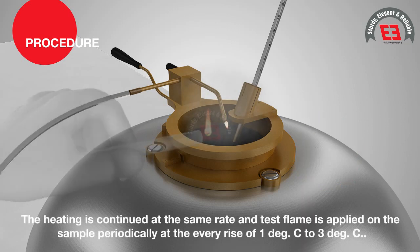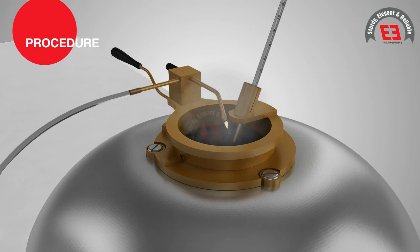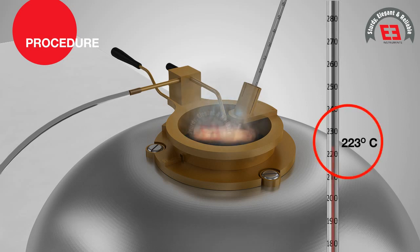The heating is continued at the same rate and test flame is applied on the sample periodically at every rise of 1 to 3 degrees Celsius. When binder itself gets ignited and continues to burn for 5 seconds, the temperature at that instance is noted and recorded as the fire point.